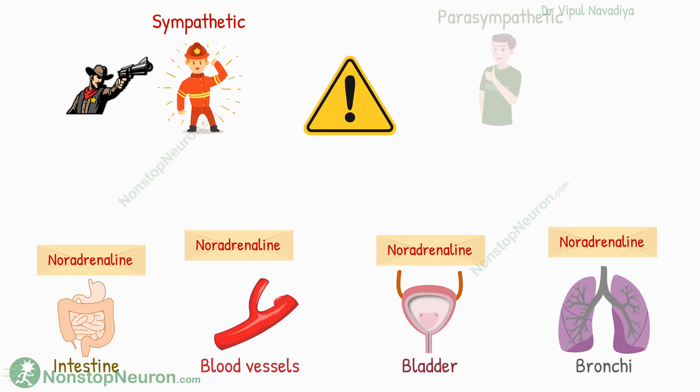Although all the organs have received the same mail, they cannot give the same response. That is because, depending on the contribution of an organ in fighting the emergency, its smooth muscles should either contract or relax. For example, in this do-or-die situation, the smooth muscles in arterioles need to contract so there can be an increase in blood pressure, which helps circulate blood. On the other hand, the smooth muscles in the bronchi need to relax so that the airway can get wider and you can breathe more air. Thus, depending on what role the organ is playing, its smooth muscles should either contract or relax.